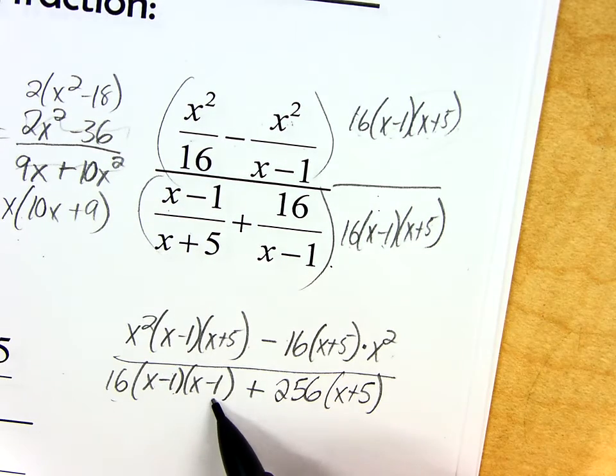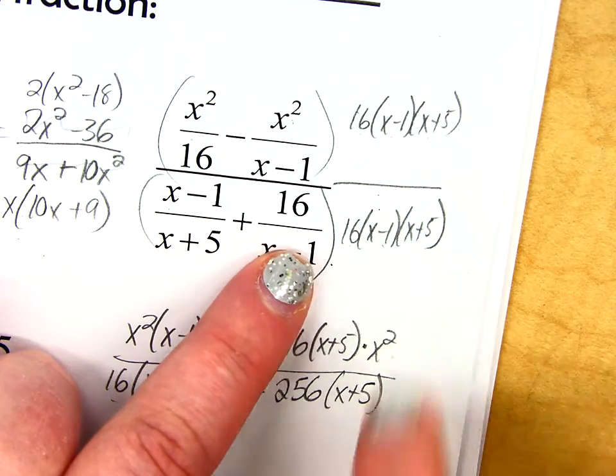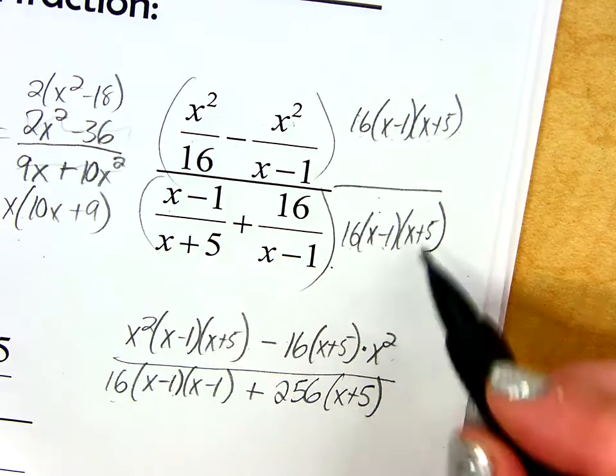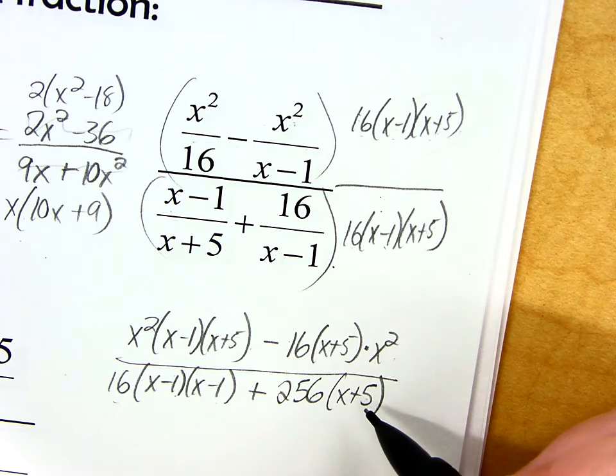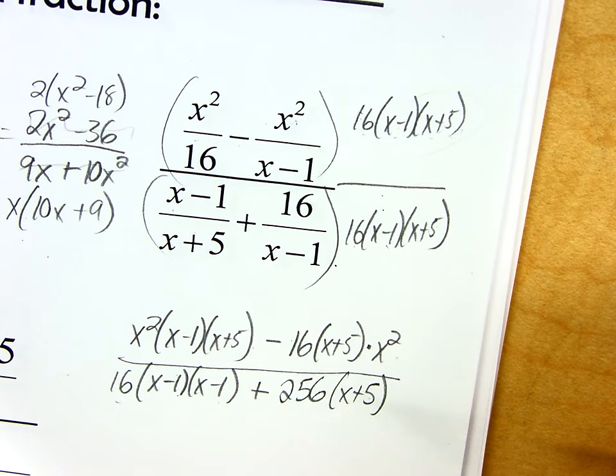The x plus 5s will cancel. So, I have x minus 1 times 16 times another x minus 1. So, that's how I had both of those there. And then, in the last one, x minus 1s cancel. 16 times 16 gets me the 256 times that x plus 5. Does that make sense where all those pieces came from? Now, I just have to do a whole bunch of crazy algebra to simplify this.